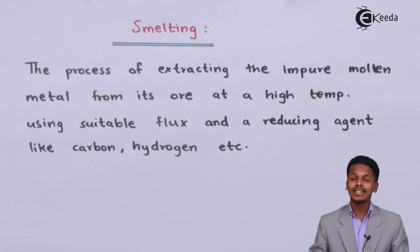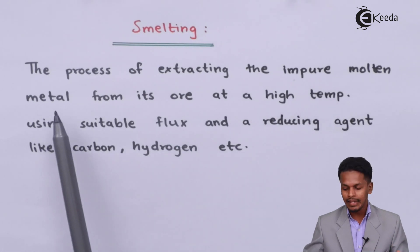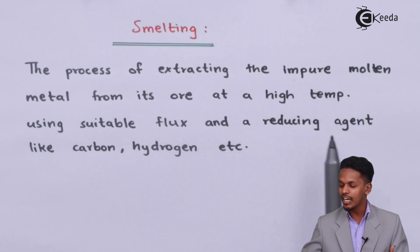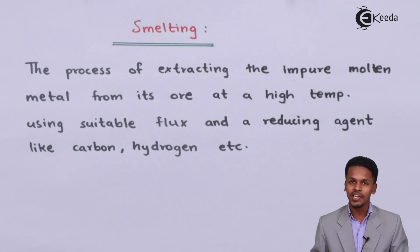Now let us understand what is actually smelting. The process of extracting the pure molten metal from its ore at high temperature using suitable flux and a reducing agent like carbon and hydrogen - this process is known as smelting.